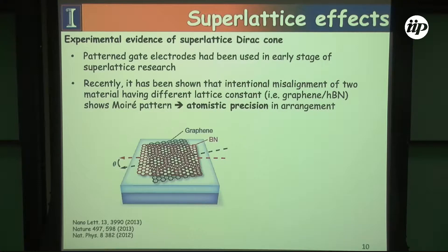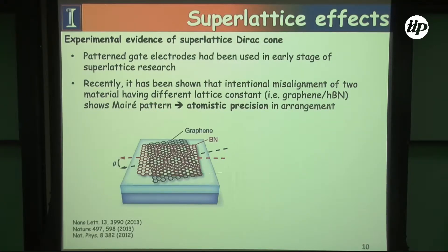The more successful approach for superlattice effects is by using moiré patterns — taking graphene and putting it on boron nitride, which has a close but slightly different lattice constant. When we simply orient the graphene at a small angle, we can create moiré patterns that give us a new superlattice constant in addition to the graphene lattice constant.